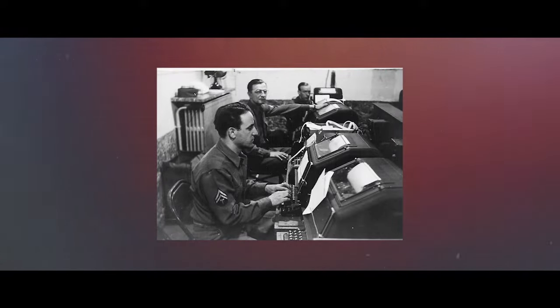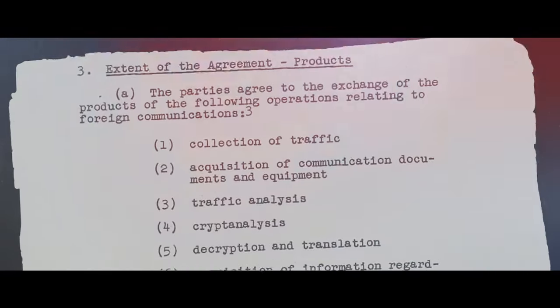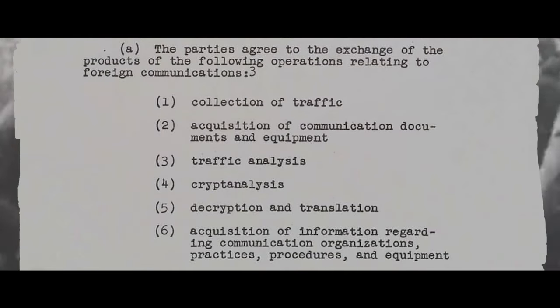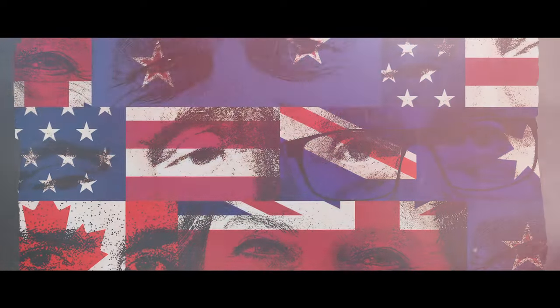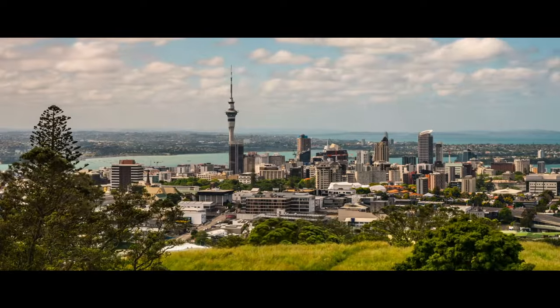The United States and the United Kingdom on 5th March 1946 signed the British U.S. Intelligence Agreement, also known as the UK-USA Agreement. By 1955, the formal status of the UK-USA Agreement was officially extended to the Five Eyes Intelligence Alliance, comprising of the United Kingdom, United States, Canada, Australia and New Zealand.